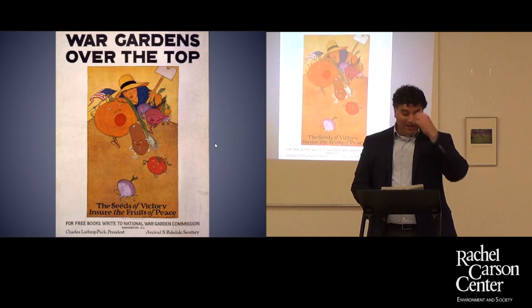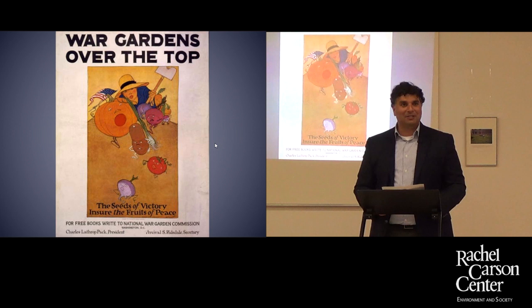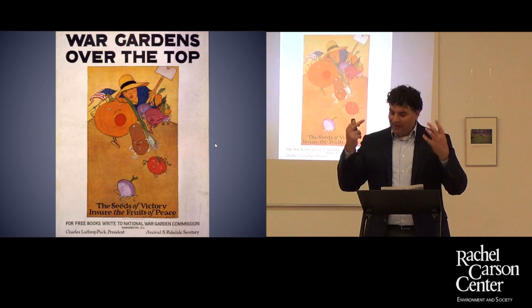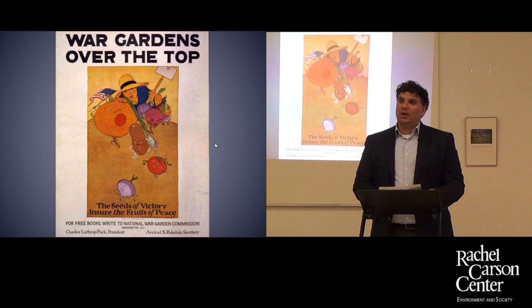Belligerent countries, as part of this food mobilization campaign, often encouraged home gardening. Here's an image from the War Garden Commission out of the United States — it's a striking image with cute little vegetables, onions, tomatoes, pumpkins, and potatoes charging over the lines as if they're in war, with a farmer behind them holding a hoe as if it were a rifle. There's a strong militarization of imagery here.